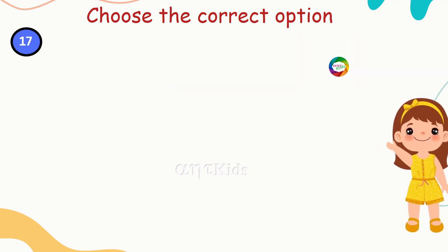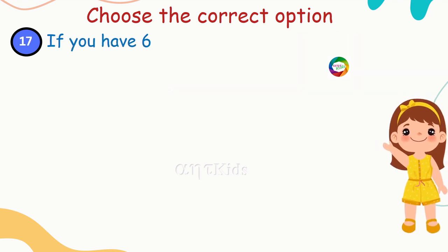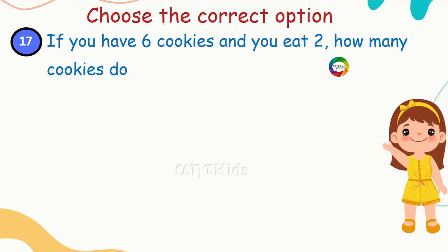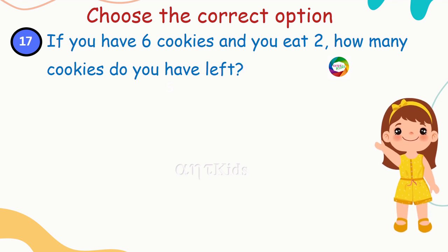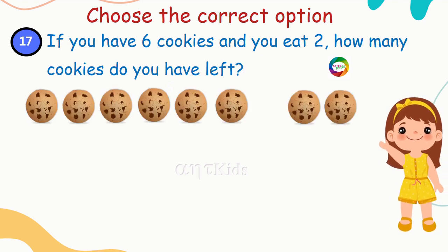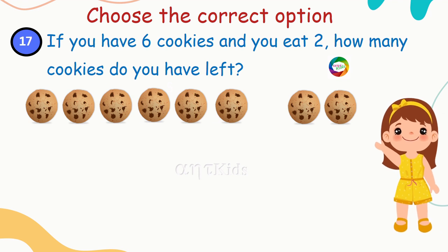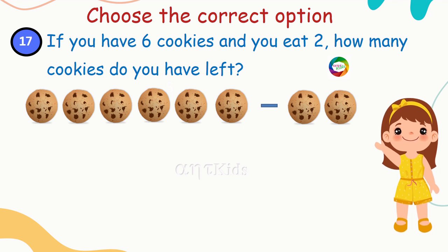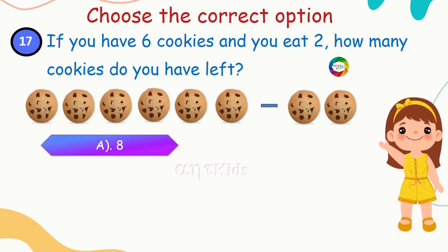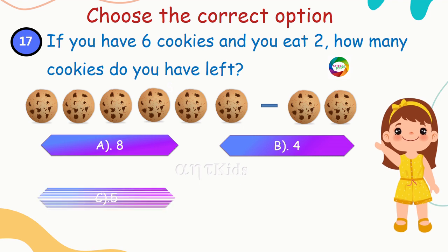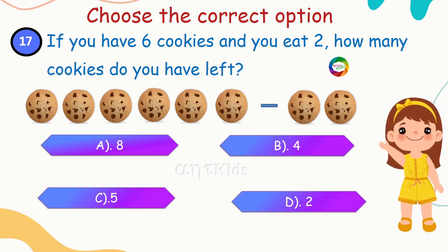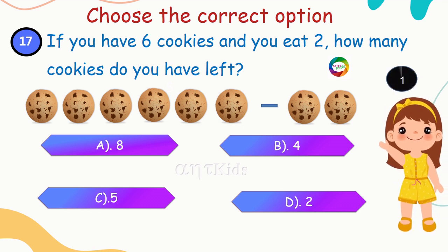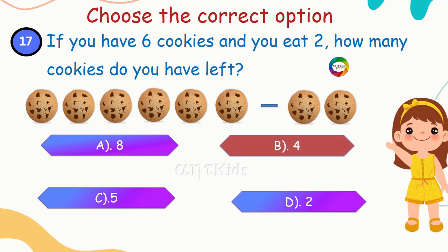Next question: if you have six cookies and you eat two, how many cookies do you have left? You have six cookies and eat two, so you have to subtract. Options are: 8, 4, 5, 2. Yes, you're right — four cookies left.